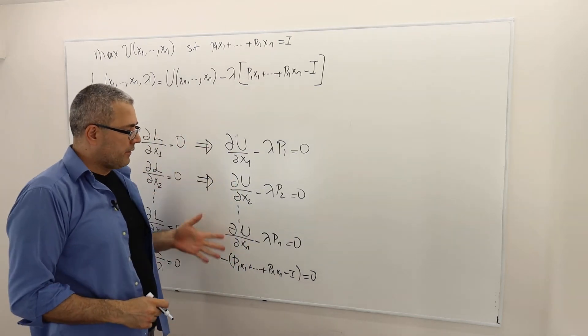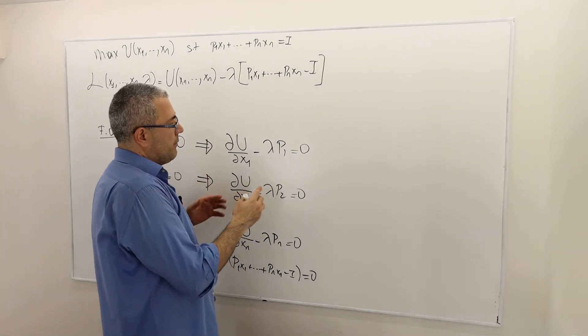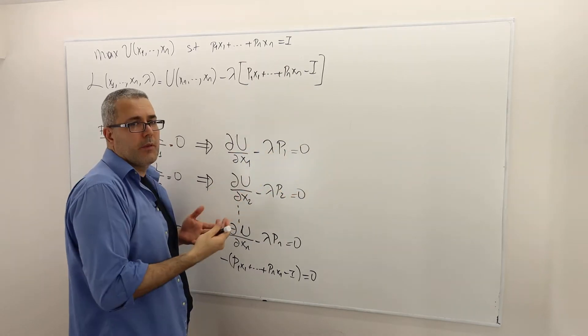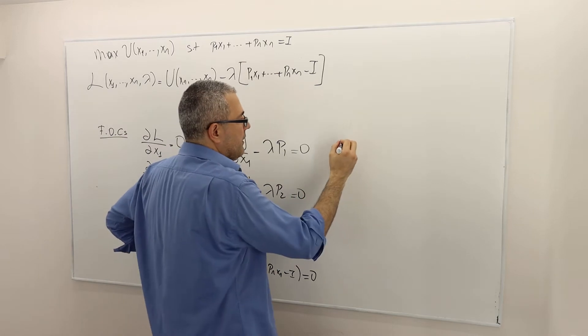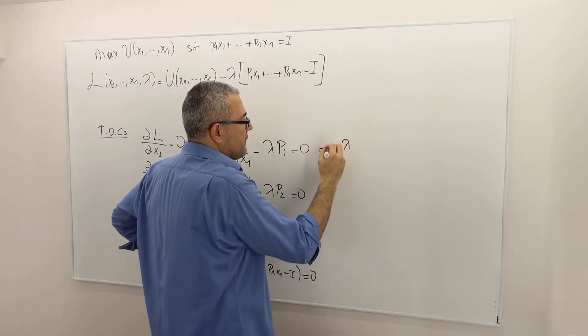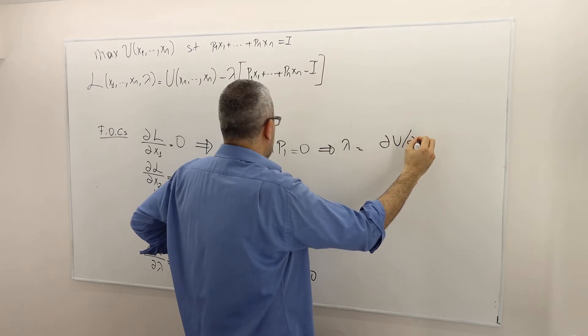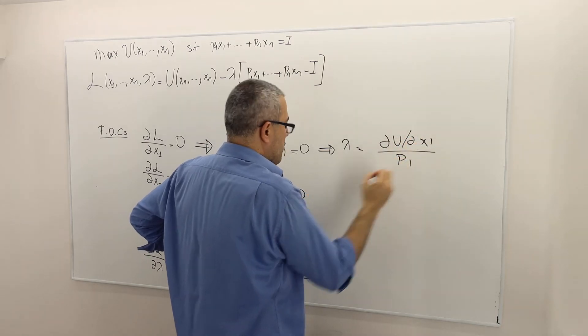So now let's simplify these equalities. That means send the lambda p1 to the other side and then divide both sides by p1 and leave lambda alone. So that means lambda is equal to del u del x1 divided by p1.